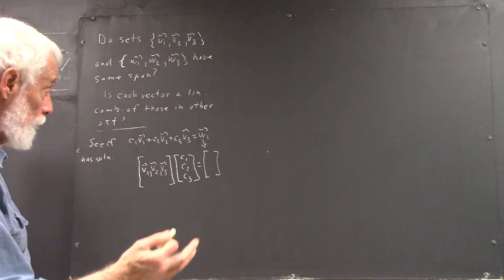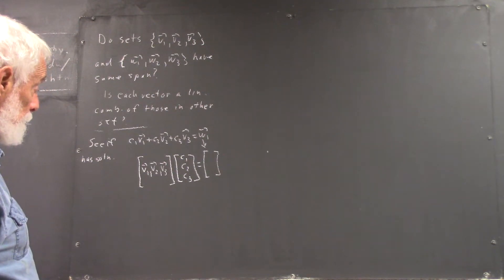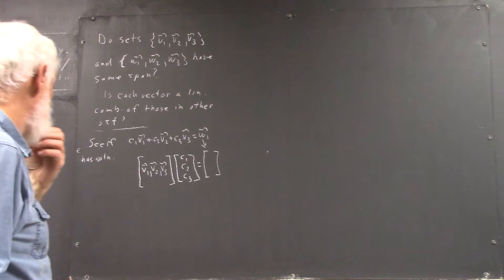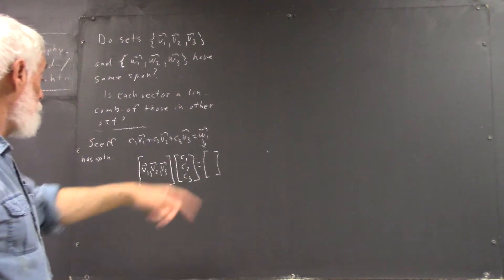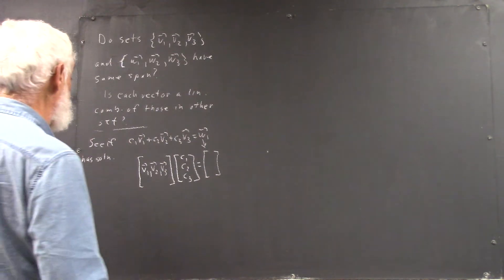And let's make sure. Are these column vectors? We have the components of V1 that have to be multiplied by C1. Yeah, they're column vectors. OK. So, is that the case? Does this have a solution?